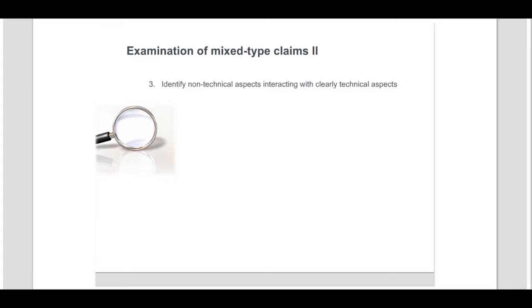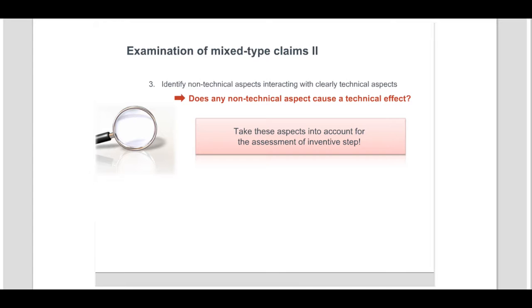The assessment continues with the identification of any non-technical aspect which interacts with the clearly technical aspects of the claimed features to cause a change in the physical nature or technical functioning of the clearly technical aspects. It has to be determined whether any non-technical aspect is involved in causing a technical effect in combination with the clearly technical aspects and hence contributes to the technical character of the claimed subject matter. If any such aspect is identified, it is to be considered for the assessment of inventive step.